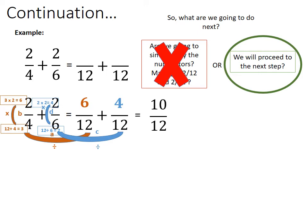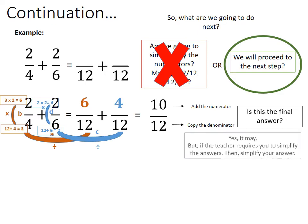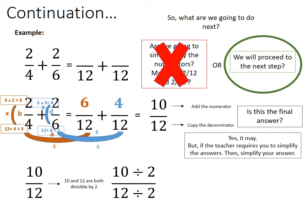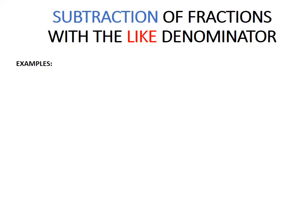Now since you have the same denominators, simply add the numerators: 6 plus 4 equals 10, and copy the denominator, giving 10 over 12. If the teacher requires you to simplify the answer, then simplify. 10 and 12 are both divisible by 2: 10 divided by 2 equals 5, and 12 divided by 2 equals 6. So 5 over 6 is your final simplified answer.